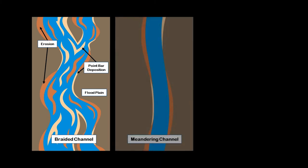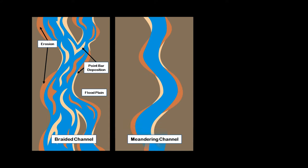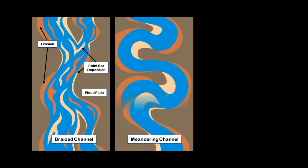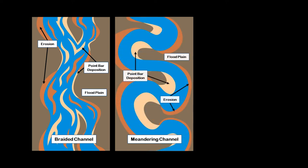Now we will have a look at channels. One type of channels are braided channels that are made up of networks of small channels, sandbars and temporary islands. These occur in high sloped areas with high sediment loads. When buried, the channels and bars are of interest as stratigraphic traps. Next up, meandering channels, which are formed with less energy than braided channels. These channels have a meandering course where sediments are eroded from the outside bend and deposited on the inside. Again, when buried, these channels and bars are of interest for stratigraphic traps.